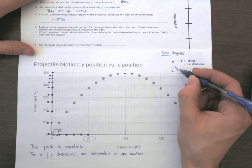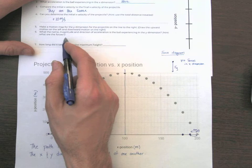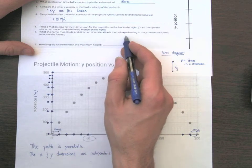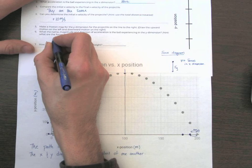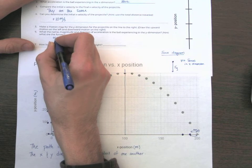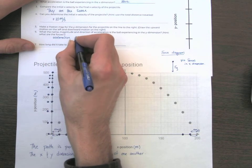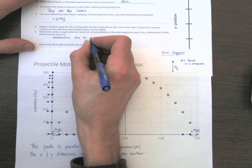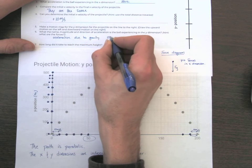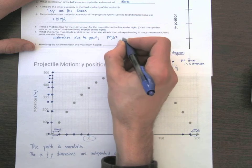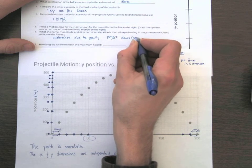So let's answer this question. What's the name, magnitude, and direction of acceleration the ball is experiencing in the y-direction? The name is the acceleration due to gravity. The magnitude is 10 meters per second squared. And the direction is down. Or we can say negative.